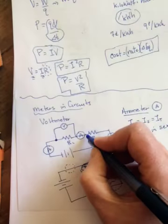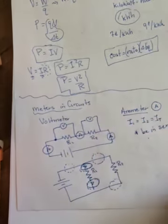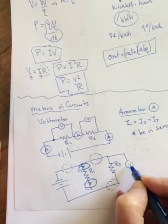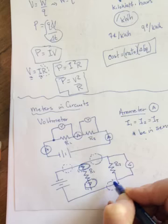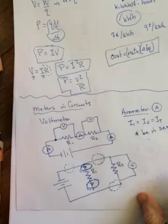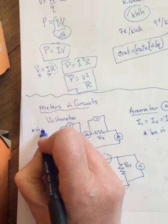If I want to know the voltage in R2, again, I would need to put it parallel. Over here, again, I would need to put my voltmeter in parallel. For R2 or R1, remember in parallel, voltages are the same. So a voltmeter must go in parallel.